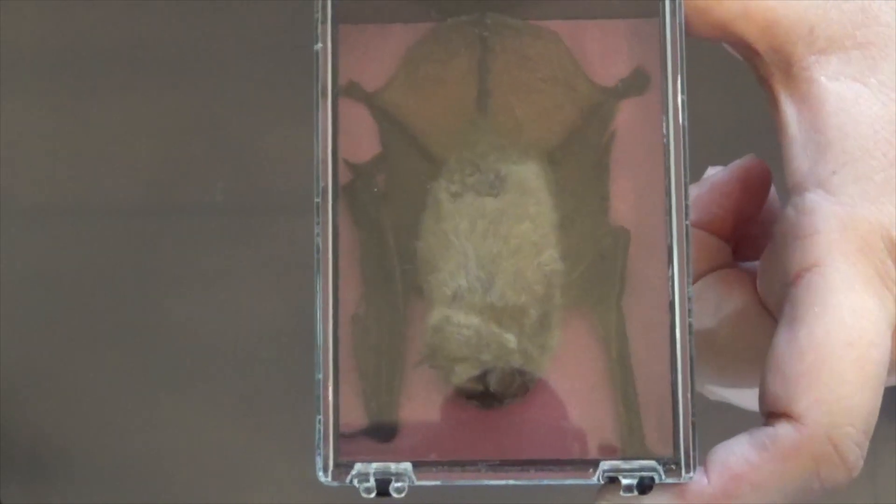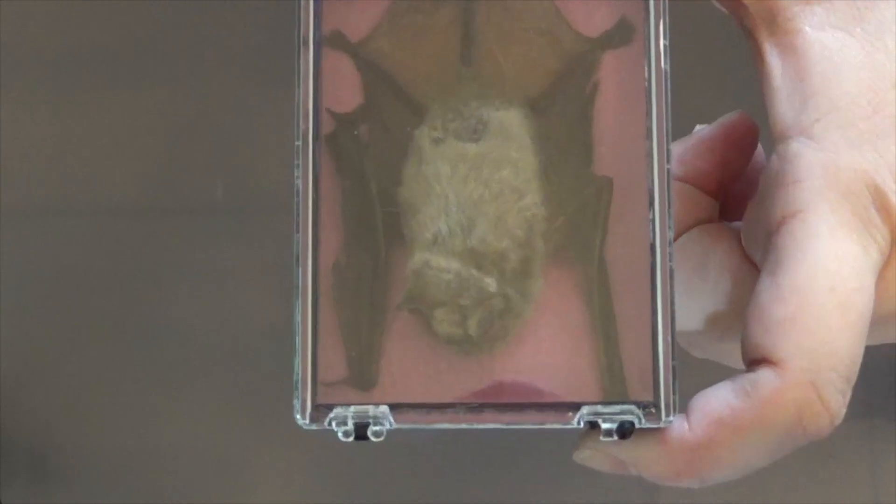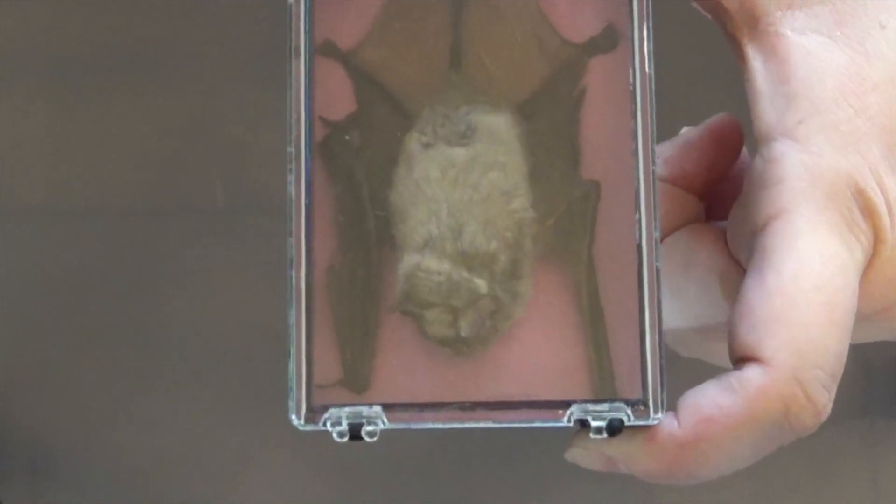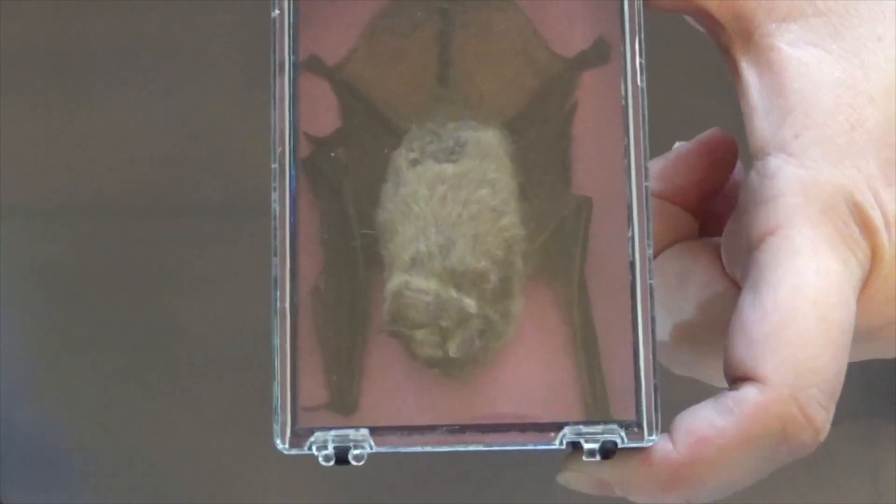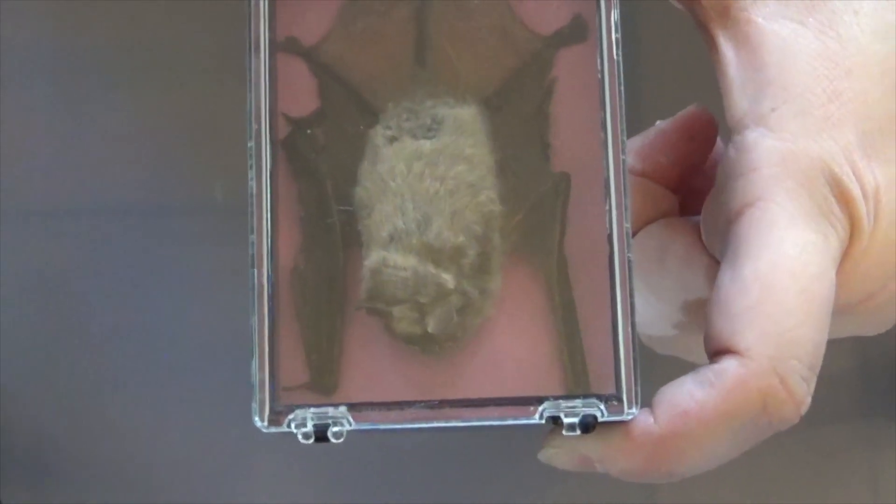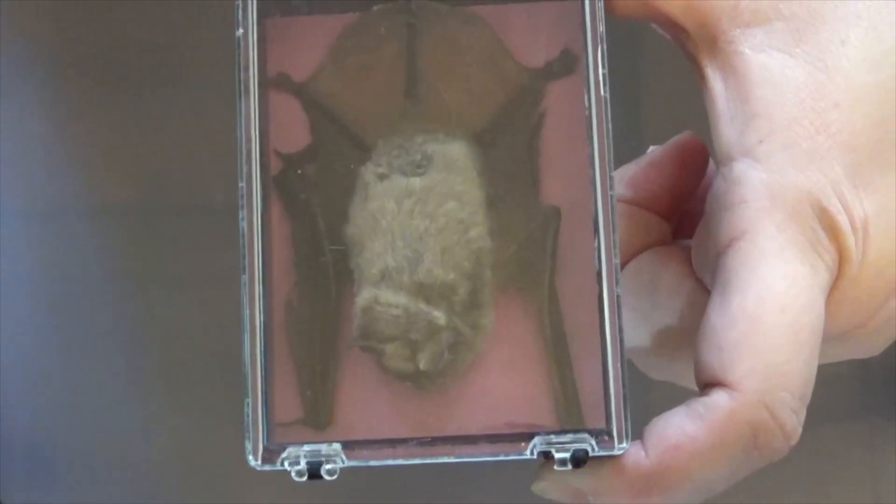So even though he can't see with his eyes very well, he can see with his brain and that his echolocation has made a map to enable him to see trees, to see where there might be insects, to see where there might be rocks that he needs to avoid flying into.